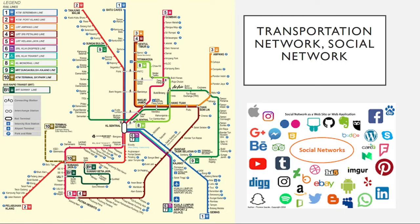This is about the transportation network and also the social network. Transportation networks can be shown as weighted graphs and unweighted graphs. The weight can represent the distance, travelling time, or cost of the journey. The well-known navigation system in weighted transportation networks is GPS, the Global Positioning System. The diagram on the left shows the train transit network in Kuala Lumpur Central. This undirected graph is an example of transportation networks with the vertices representing names of stations and the edges representing the types of trains.